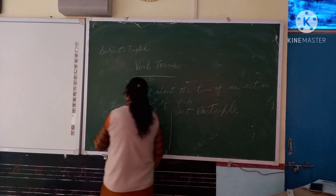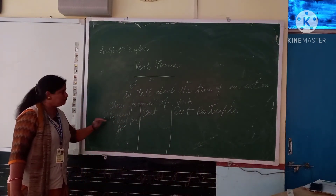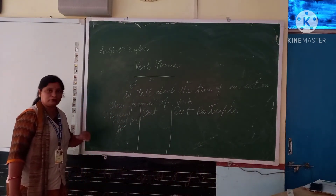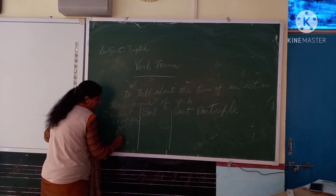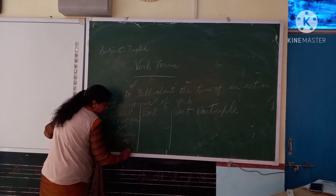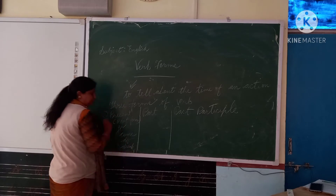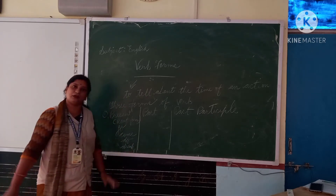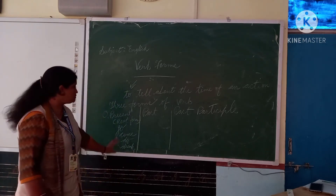Here we will write the first form, which is known as the root form or root verb. So we write: go, come, do, drink. These are the first forms.